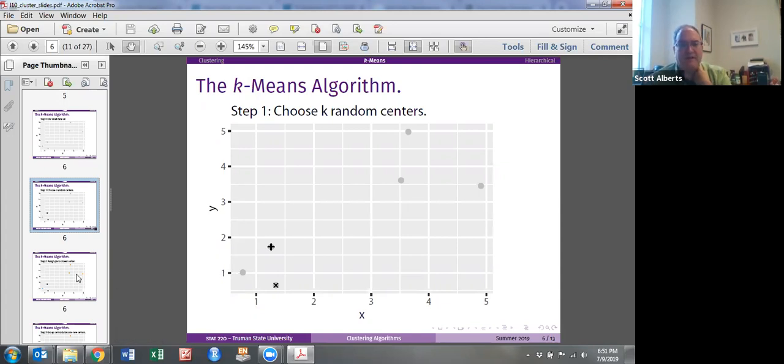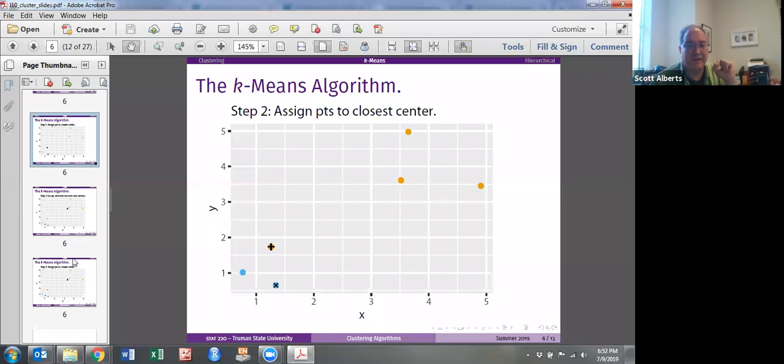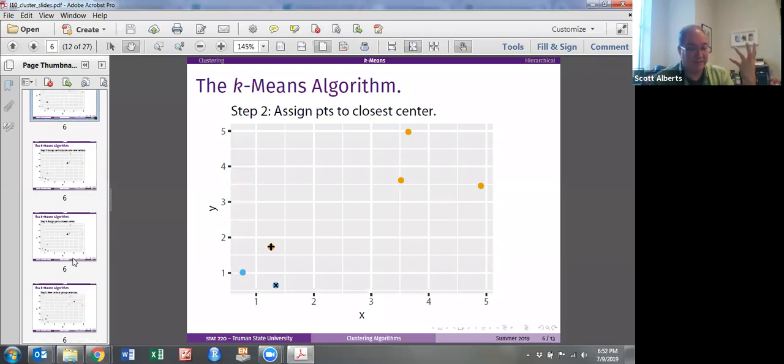So to start with we pick our two random centers and what we do then is we assign each point based off of which center is closest to them. So in our case, point one and three are closest to point three down here and the other four points are actually closer to this one. Now again, that's sort of weird because those aren't really good cluster centers, but because of the way we randomly picked our two centroids, we get that.